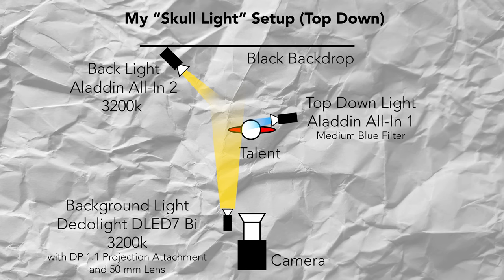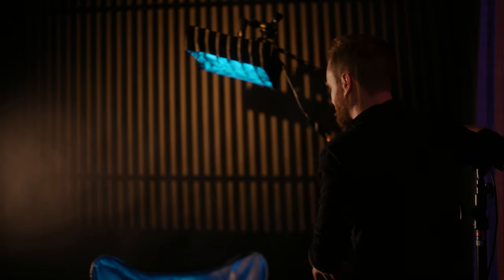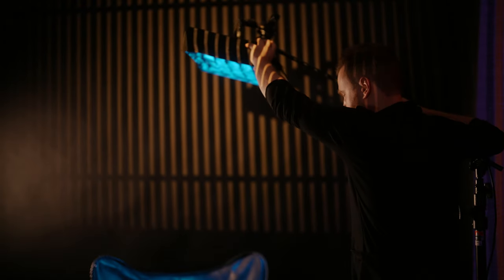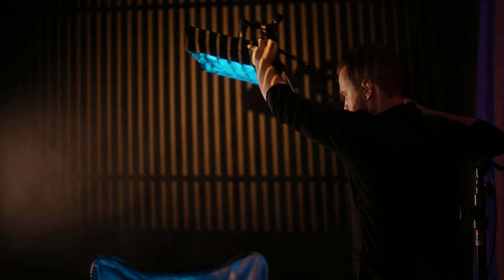The trick is to position the light in a way that it doesn't illuminate the eyes but still hits the cheekbones and my nose. This is a little bit of trial and error but since the all-in-1 is super lightweight this is very easy to pull off. And here you go — a look at the final shot.